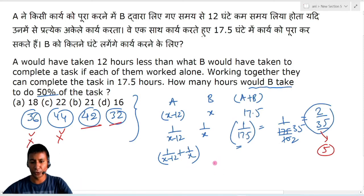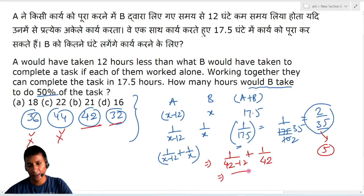So, let's say that 42 substitute so you can use 1 by 42 minus 12 plus 1 by 42. Correct. Just this value which value will be 1 by 30 plus 1 by 42.